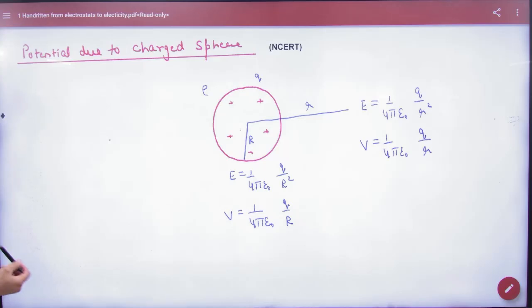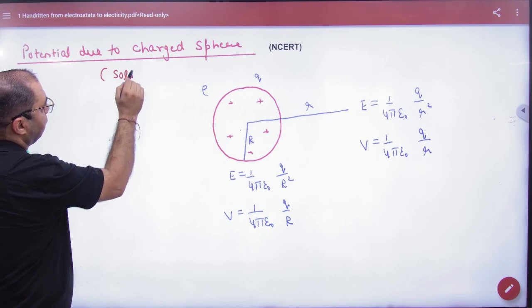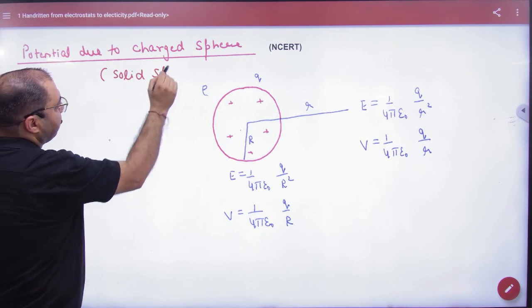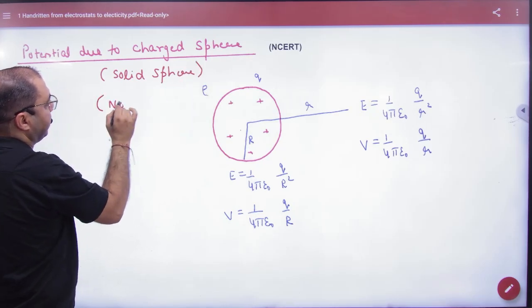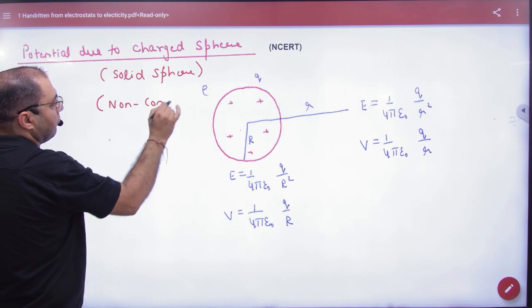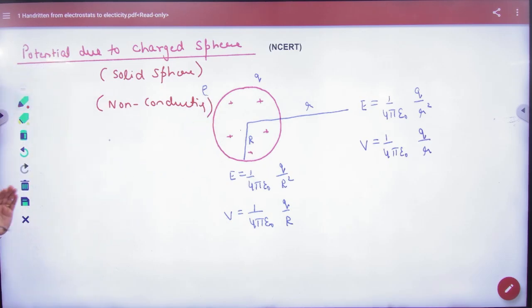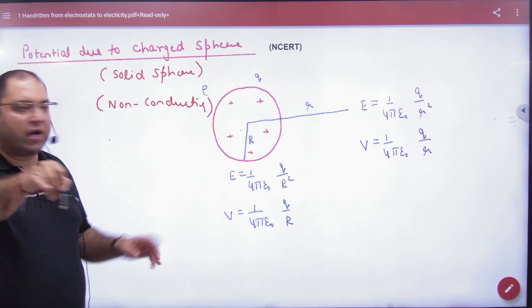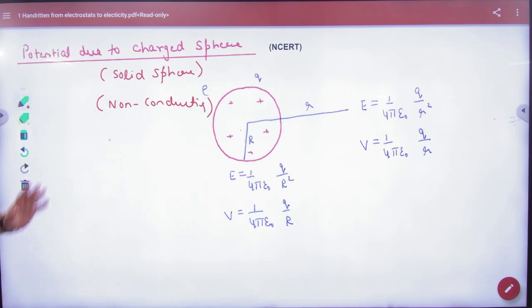Potential due to charged sphere - solid sphere. This is by default non-conducting solid sphere, which is in volume. We will use ρ in density. Now write some formula first. Listen and then note the formula in the end.